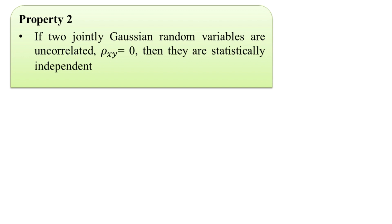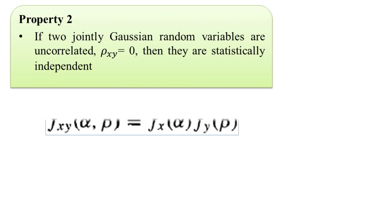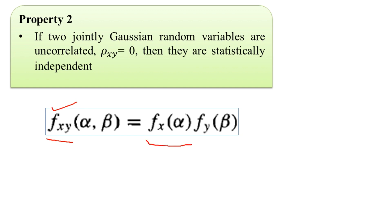Upon that, the probability density function has the relation that small f suffix X Y, the joint probability density function for the random variables X and Y as a function of alpha and beta, is the product — the multiplication — of the individual probability density functions for random variables X and Y. This is property two for the Gaussian random variables.